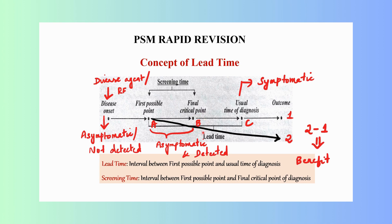The next point is Point B, which is called the final critical point. It is called the final critical point because if you apply a screening test beyond this point, you may not be able to receive the expected benefits from a screening test. Ideally, a screening test should be applied between the first possible point and the final critical point, which is called the screening time.